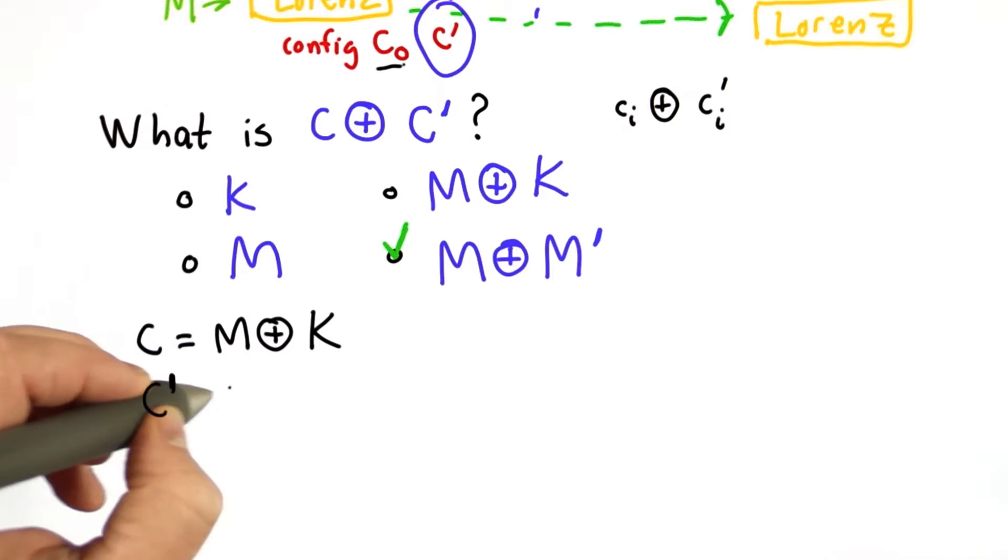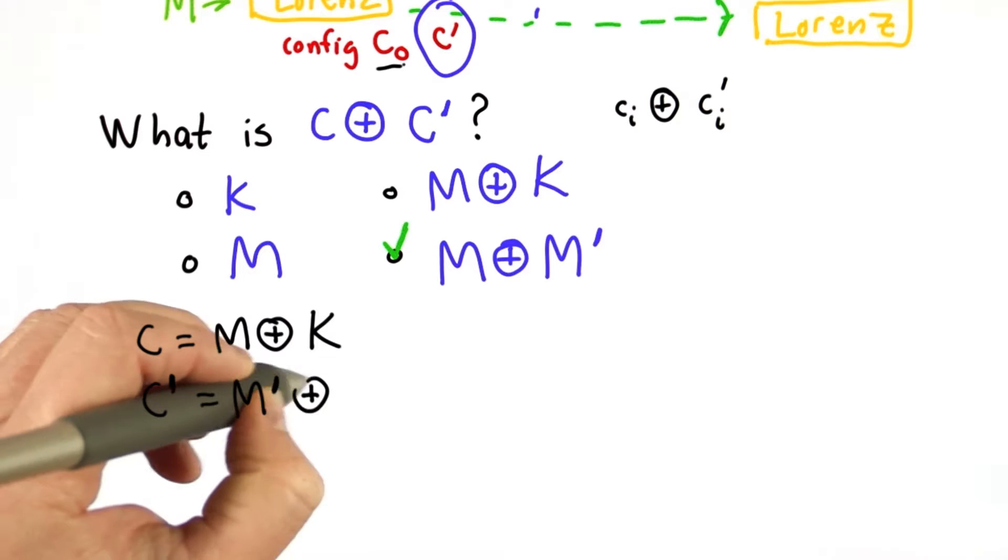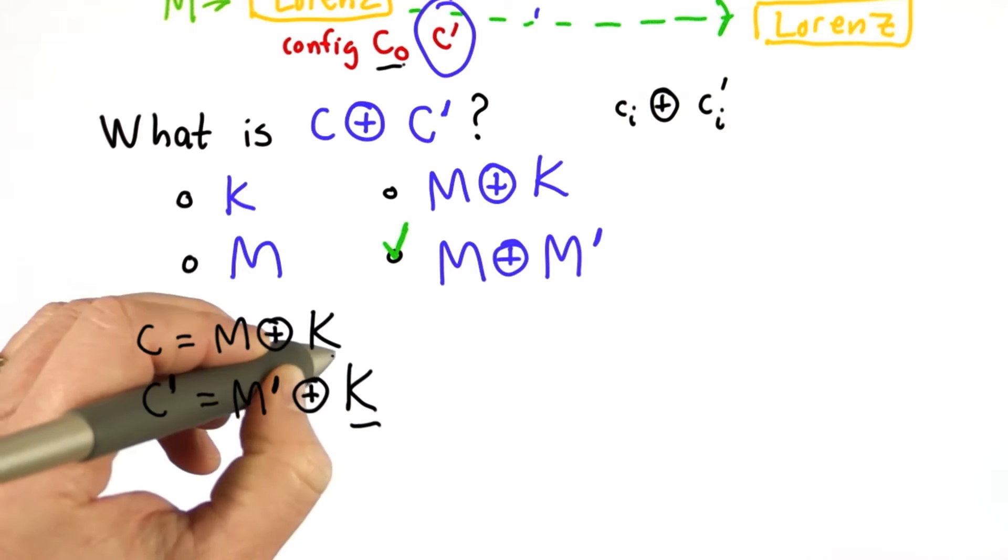So c is equal to m xor k. C prime is equal to m prime xor k. Note that the k is the same in both cases.